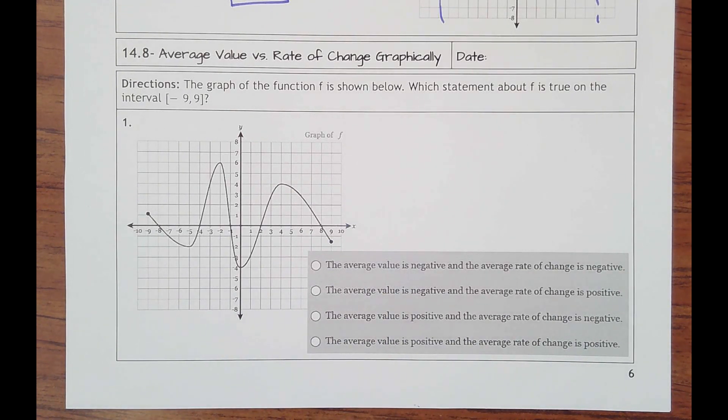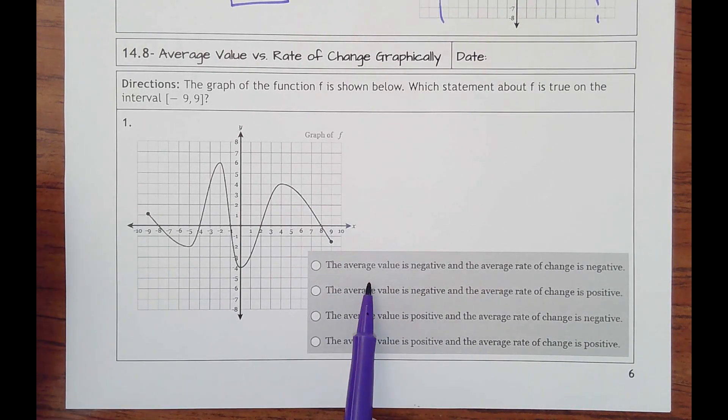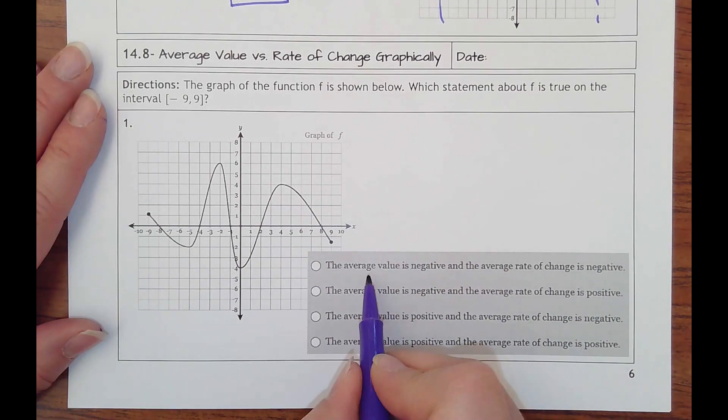Directions say that the graph of the function f shown below, which statement about f is true on the interval negative 9 to 9. It's talking about the average value versus average rate of change.